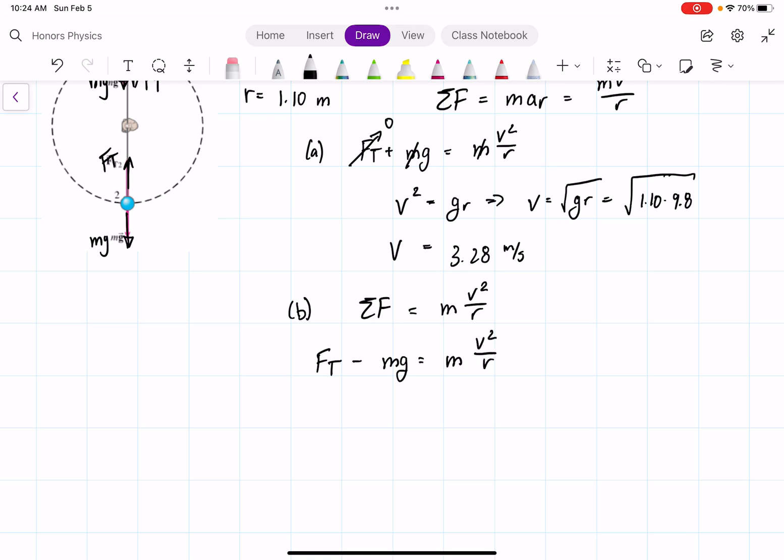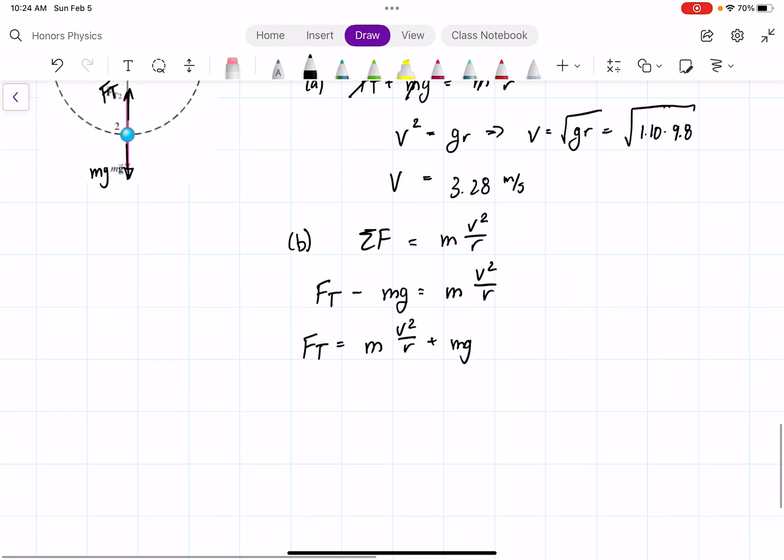So if we solve for the tension, we get force of tension equals MV squared over R plus MG. And what we're going to do is we are going to just plug in, and we're going to also factor out the M to make it a little easier. So we get V squared over R plus G.